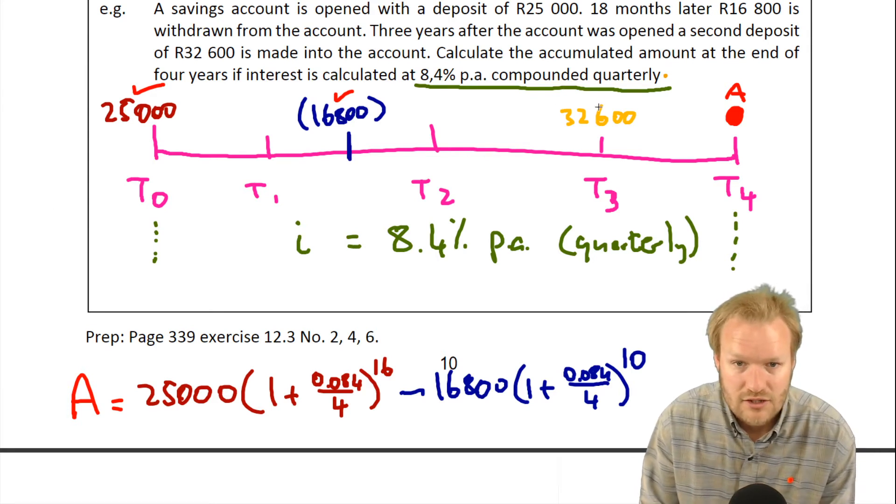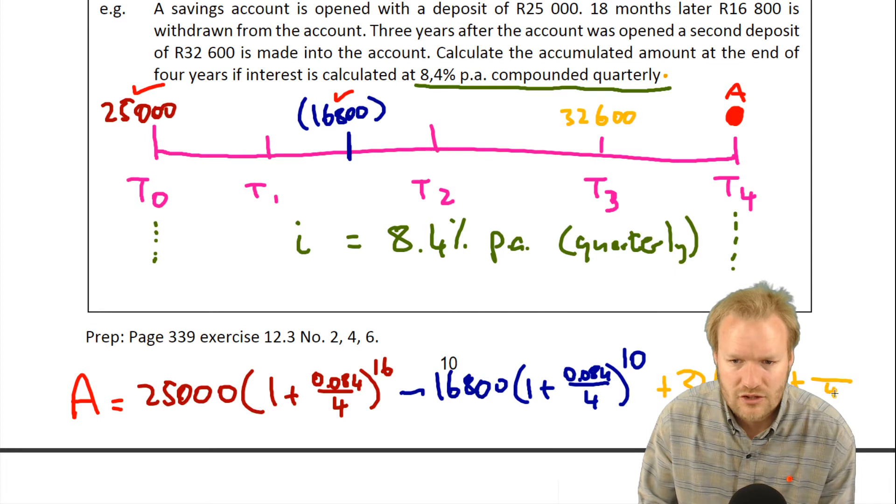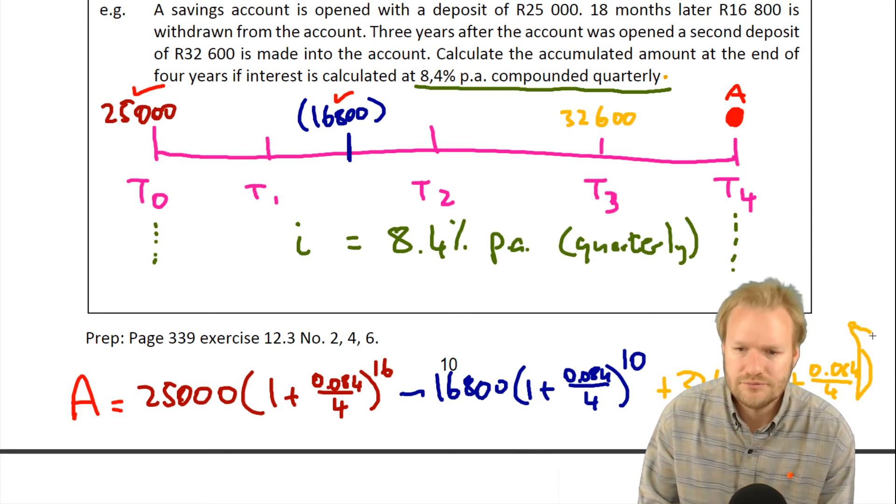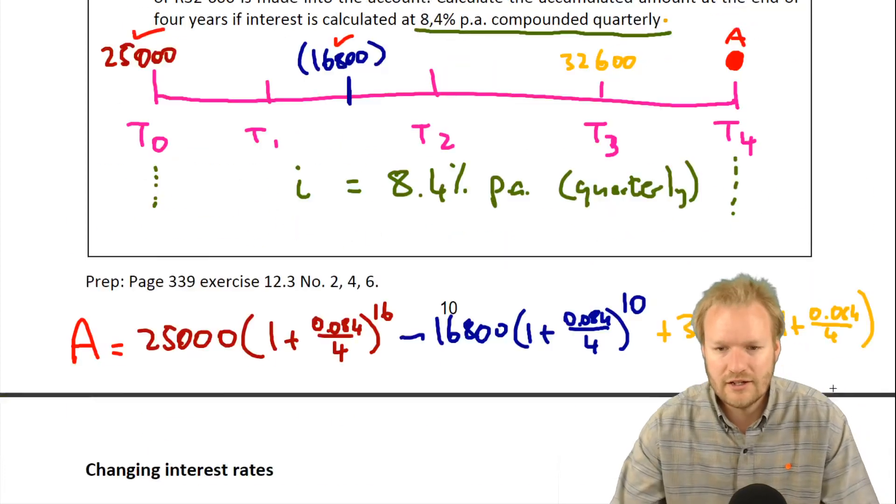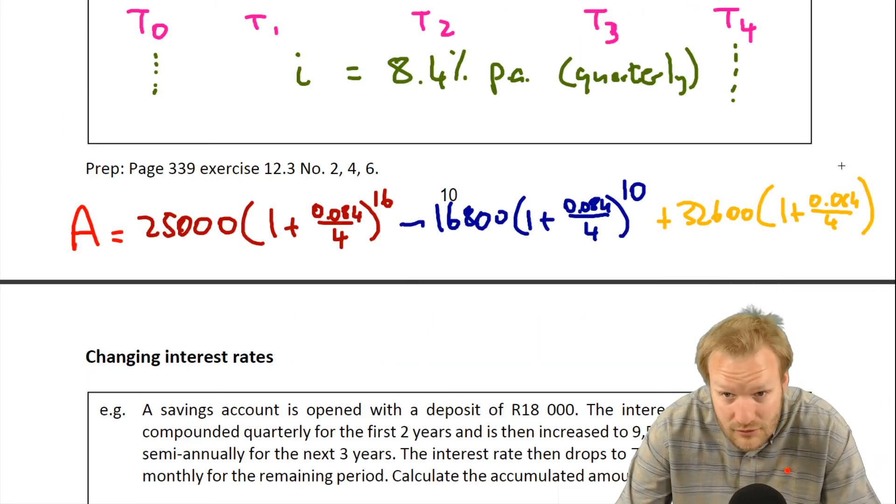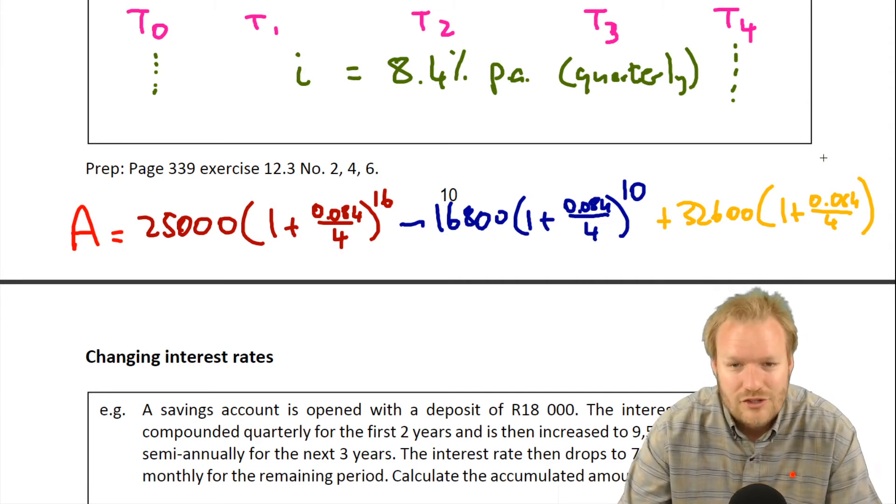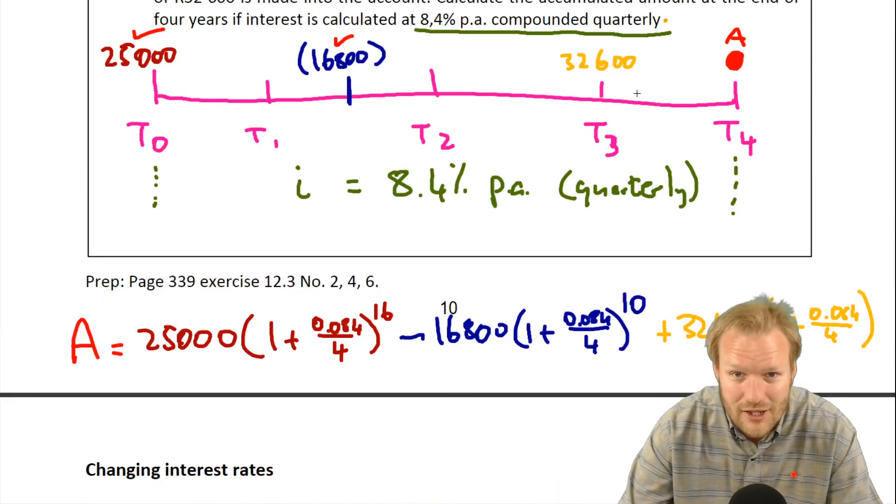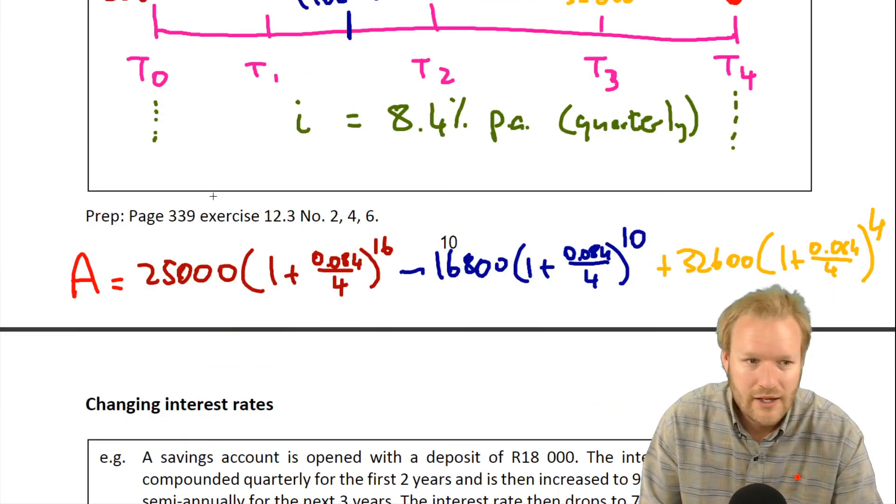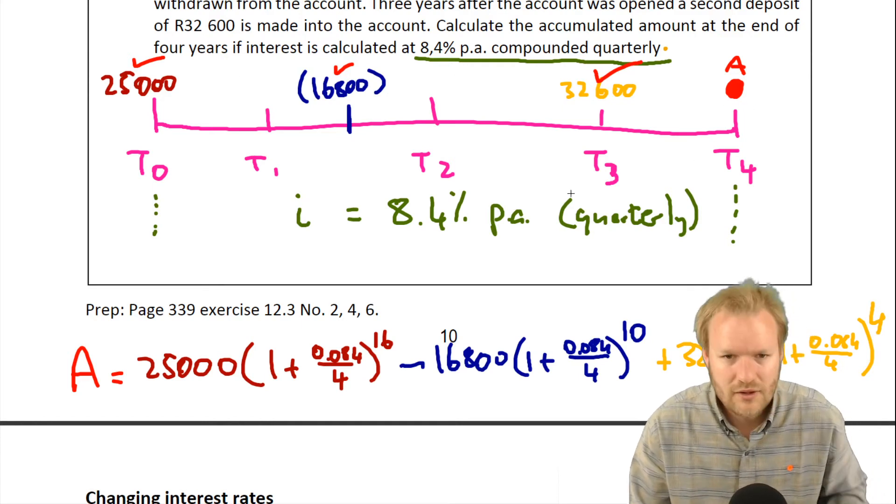So we're going left to right and going, cool, we've accounted for that. Now we've got this last bit, the 32,600. We've put it in. So we're going to add the 32,600 plus all the interest that we've accrued on it. So we've got 1 plus 0.084. This was in at T3, so it's in for one year, so it's in for four quarters. Just to be thorough—okay, we've dealt with everything along the way.